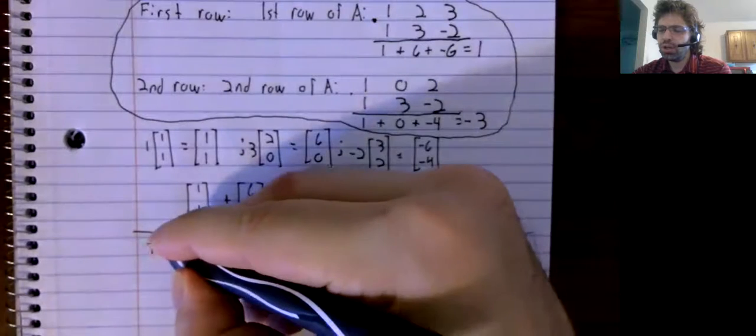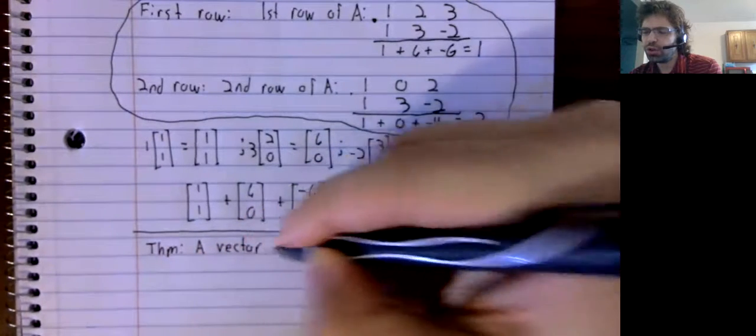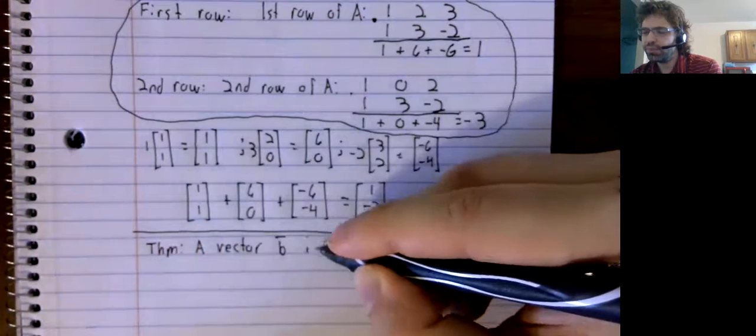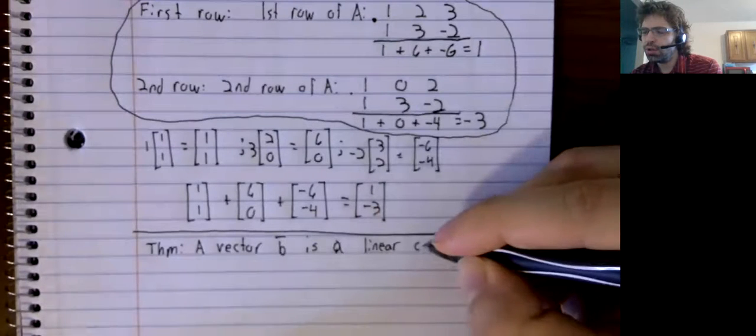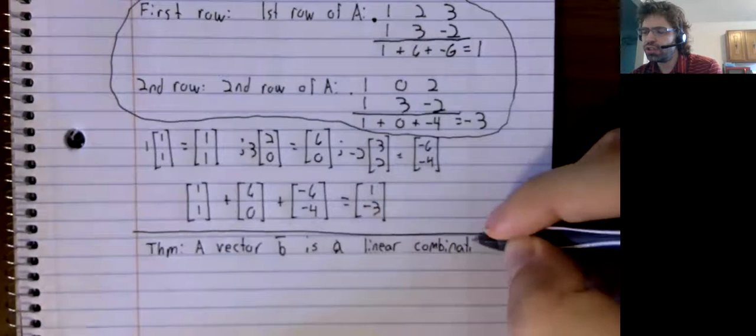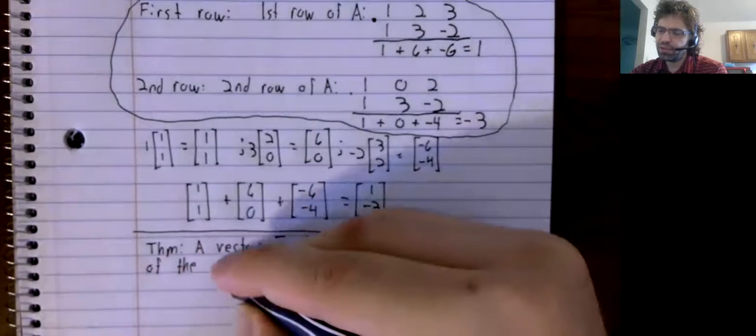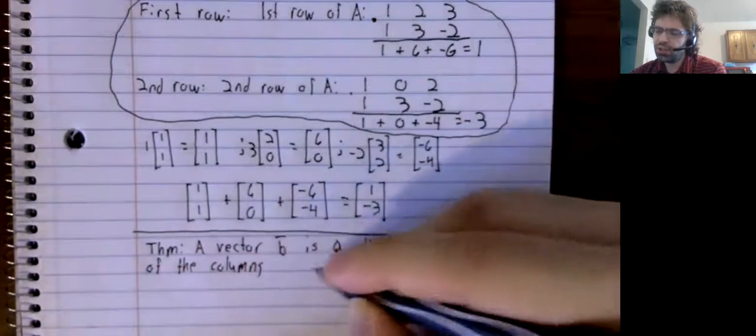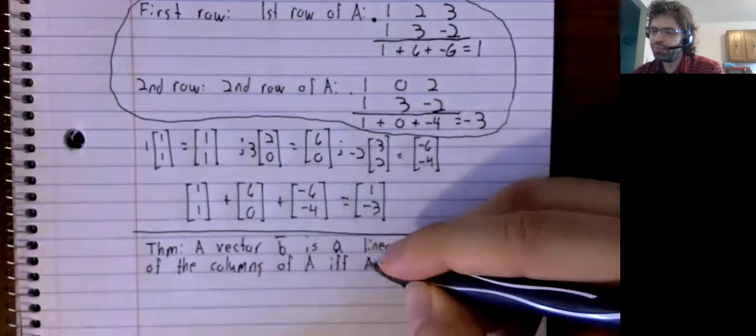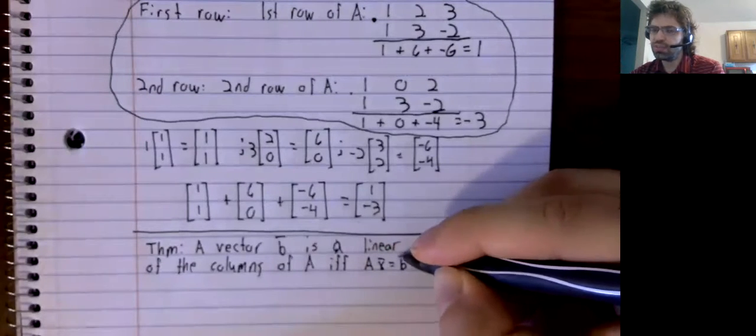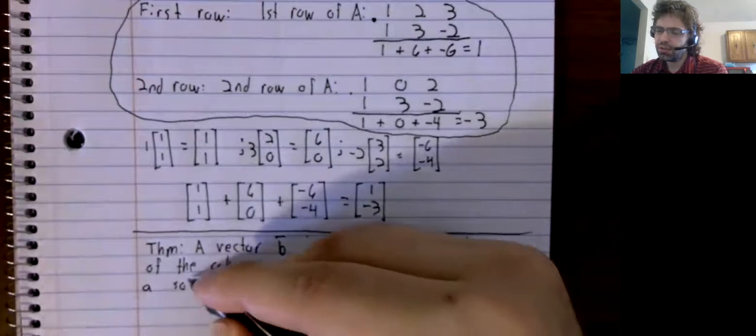Consider a previous theorem. A vector B is a linear combination of the columns of A, if and only if AX equals B has a solution.